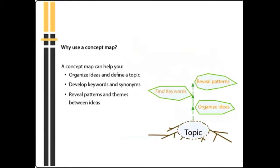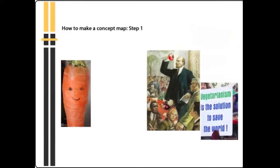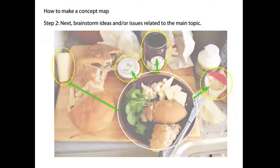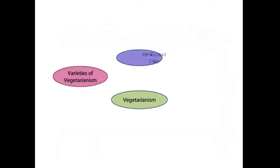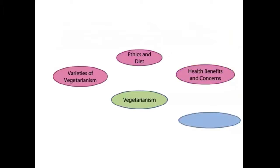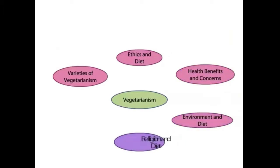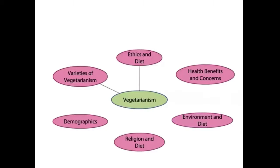A concept map can help you organize ideas and define a topic, develop keywords and synonyms, reveal patterns and themes between ideas, and generate search terms for your research. In our example, we'll use the topic of vegetarianism. I'll begin by writing it down and drawing a circle around it as the main topic, then brainstorming related subtopics such as varieties of vegetarianism, ethics and diet, health benefits and concerns, the environment and diet, religion and diet, and demographics.